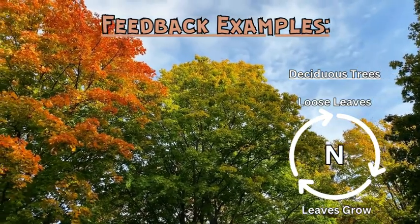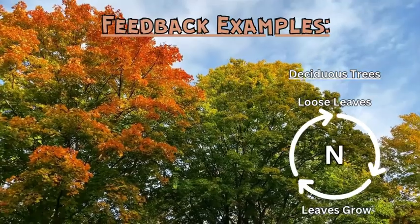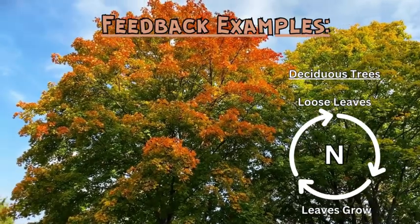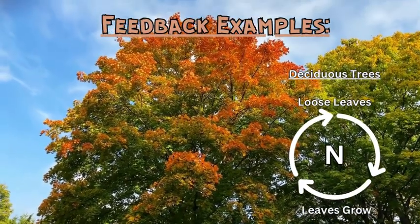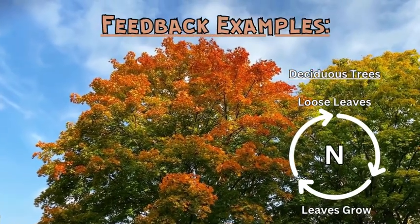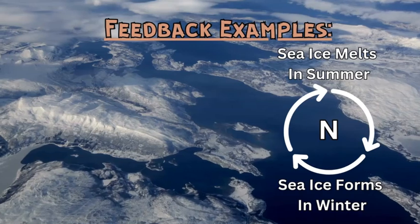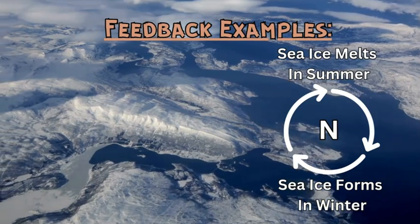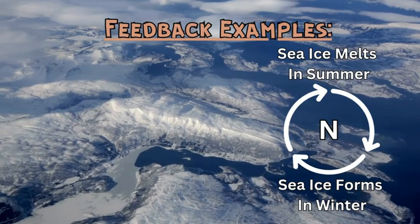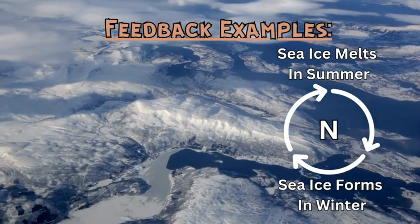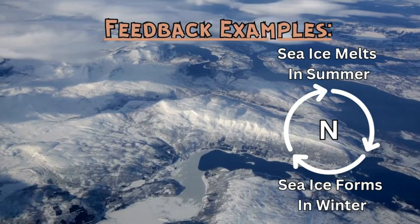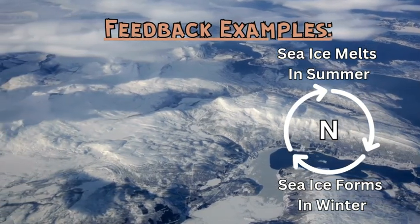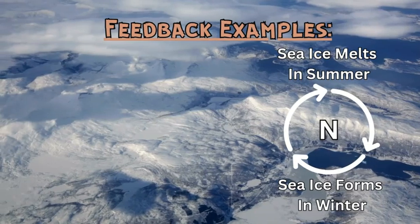A great example of a negative feedback loop would be deciduous trees in certain latitudes, where they lose their leaves in the fall or autumn and then grow them back in the spring. This annual cycle of growing and losing leaves is a good example of negative feedback, where the system goes back to equilibrium. Another negative feedback loop would be sea ice around the Arctic, which grows and develops in the winter and cold months, then melts and retracts in the summer and warmer months — a constant cycle through the year based on sunlight and temperature.